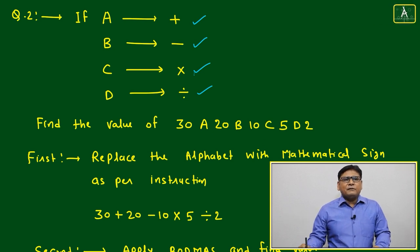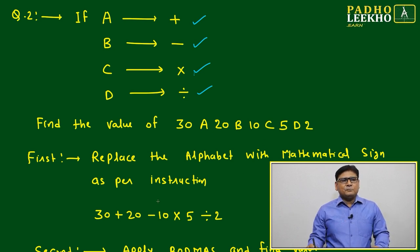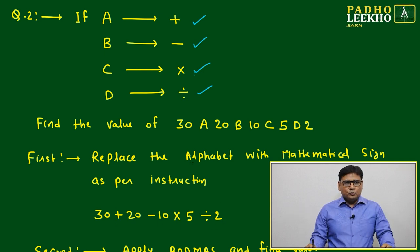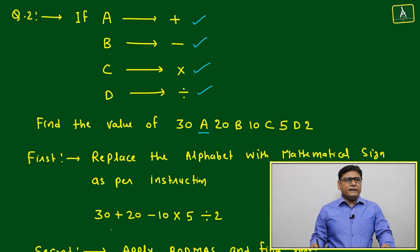First, replace the alphabet with mathematical sign as per instruction. 30 plus 20 minus 10 into 5 divided by 2. Just we are replacing. In place of A, it is this. In place of B, this. In place of C, this.